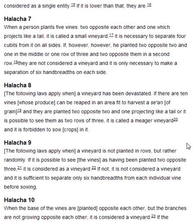Halakha 9. The following laws apply when a vineyard is not planted in rows, but rather randomly. If it is possible to see the vines as having been planted two opposite three, it is considered as a vineyard. If not, it is not considered a vineyard, and it is sufficient to separate only six handbreadths from each individual vine before sowing.